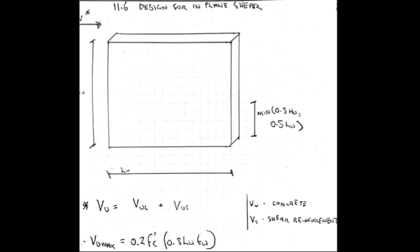Section 11.6 is designed for in-plane shear. We have VU, which is the shear strength, having a portion of shear from the concrete, which is VUC, plus VUS, which is the shear strength contribution from the steel. And we have VU max, or the maximum shear strength, which is 0.2 times strength of the concrete times 0.8 times length times the thickness of the wall, taken at the minimum of 0.5 times the height of the wall or 0.5 times the length of the wall.